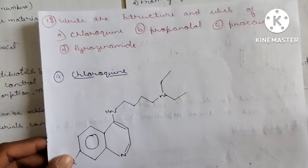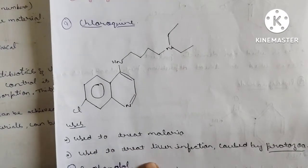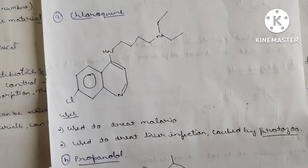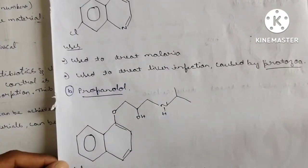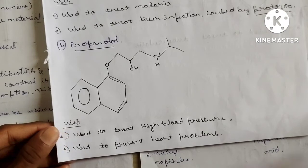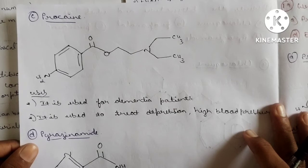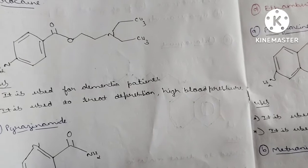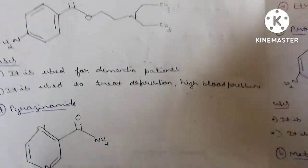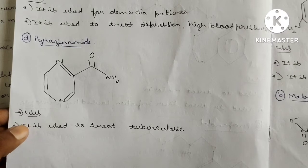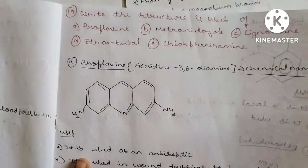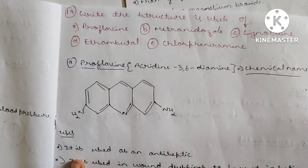Question 18: Chloroquine — used to treat malaria and liver infection caused by protozoa. Propranolol — used to treat high blood pressure and to prevent cardiac problems. Propane — used for dementia patients, central nervous system disorders, and depression. Pyrazinamide — used to treat tuberculosis.